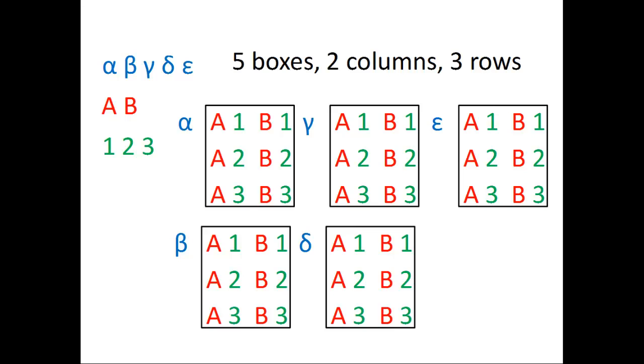So in total, we have five boxes. Each of them have three rows and two columns. So that means we have 30 possibilities in total. That's the idea behind the rule of product.